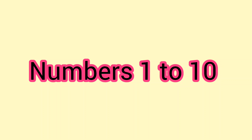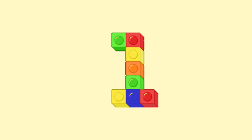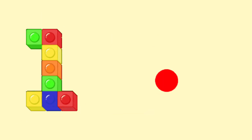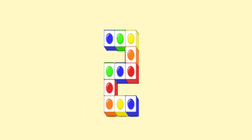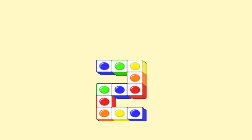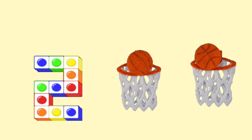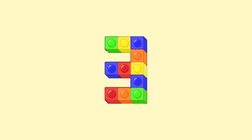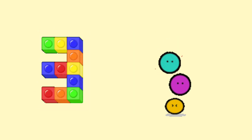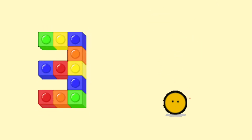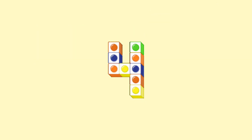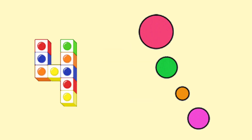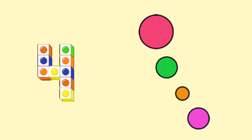Hi kiddos, we are going to learn numbers 1 to 10. 1 - you can see one ball. 2 - you can see two balls. 3 - you can see three faces. 4 - you can see four circles.